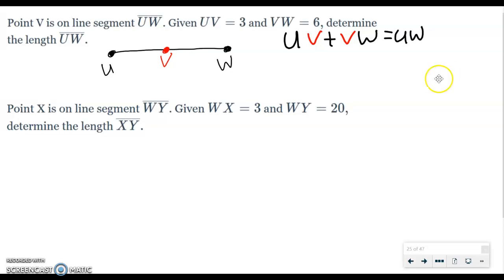Alright, now that I know that, notice I haven't used any of the numbers at all. Now I can plug the numbers in and put them exactly where they go. So here I have UV is equal to 3, and I have VW is equal to 6. And we're going to add them together, and that's going to equal UW.